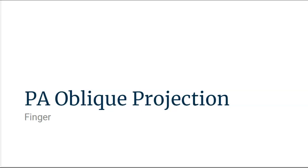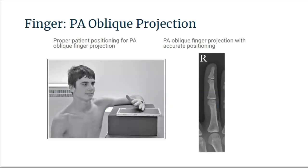Moving on to the PA oblique projection. The PA oblique image analysis guidelines state that twice as much soft tissue width should be demonstrated on one side of the phalange as on the other side. More concavity is seen on one aspect of the phalange mid-shaft than the other.